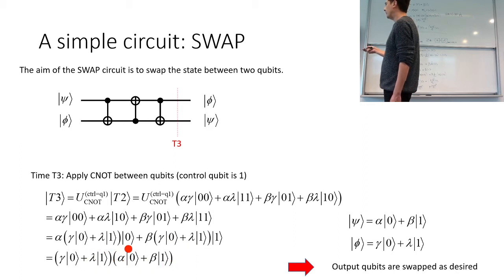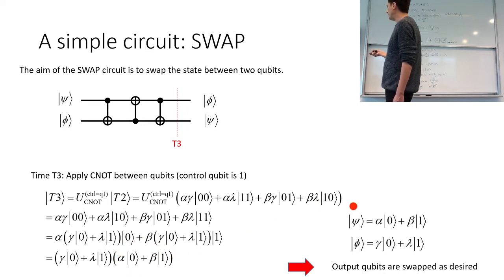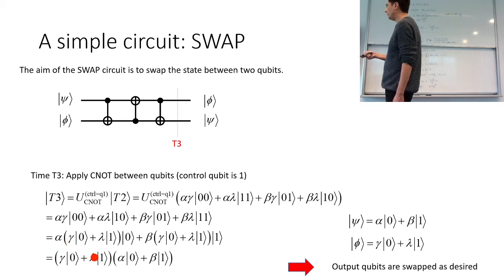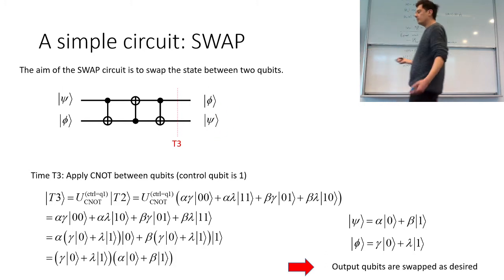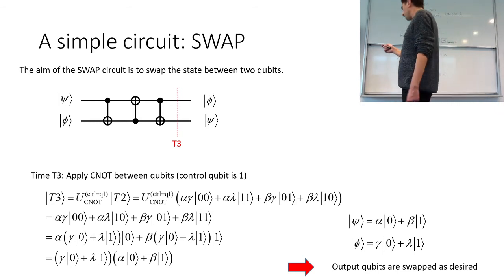Now we attempt to factorize the resulting state. We can factorize out the second qubit state, being careful about orderings. When we factorize, we see that alpha-beta is what we initially called psi and gamma-lambda is what we called phi. The first qubit now holds phi and the second holds psi — exactly the opposite of what we started with. So it's a swap gate.